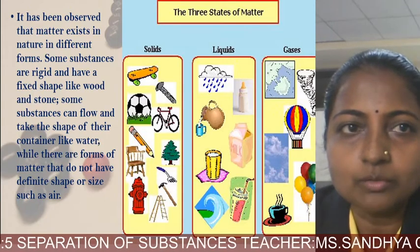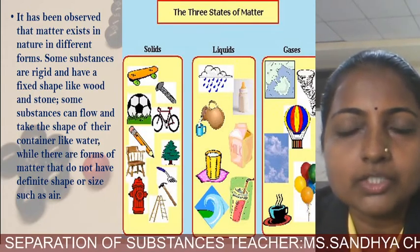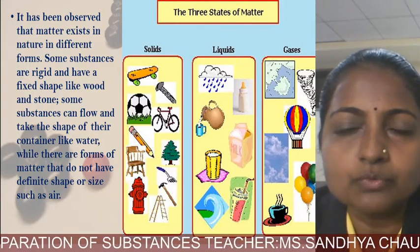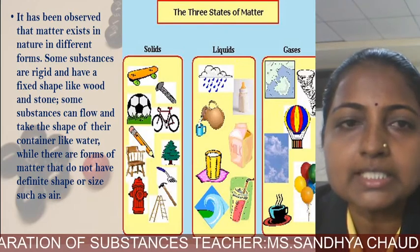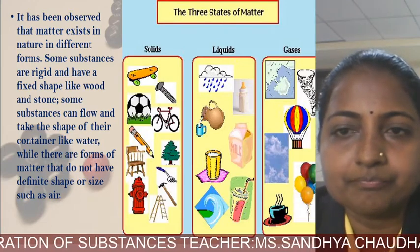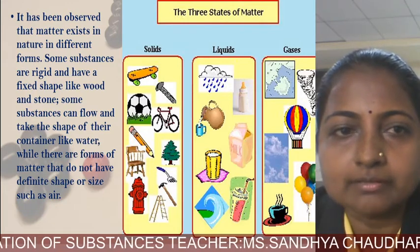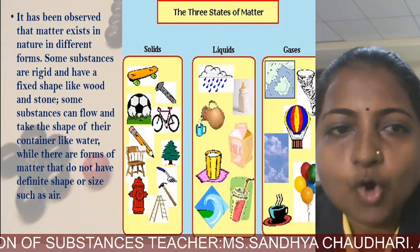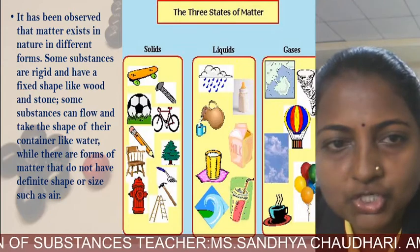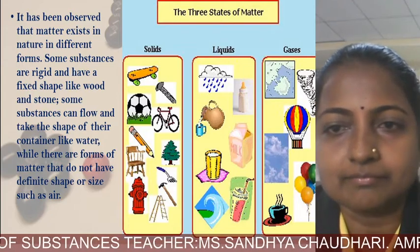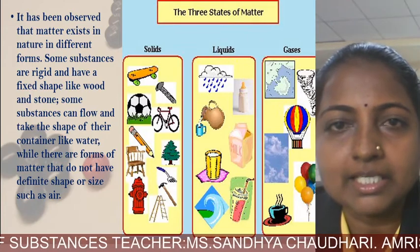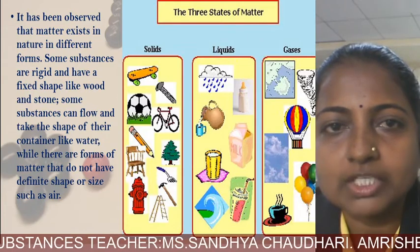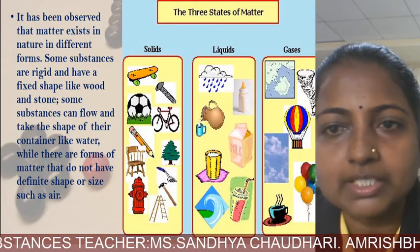Matter exists in nature in different forms. Some substances are rigid and have a fixed shape, like wood and stone. Some substances can flow and take the shape of their container, like water and oil. There are also forms of matter that do not have a definite shape or size, such as air and many gases. In the figure you can see solid, liquid, and gaseous states.